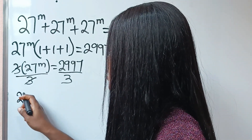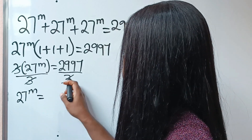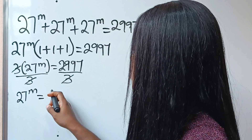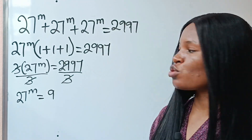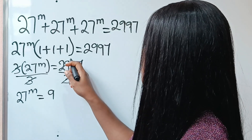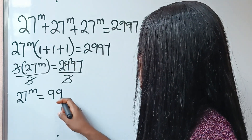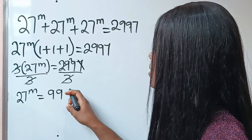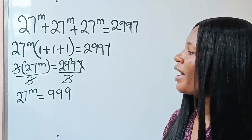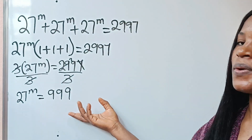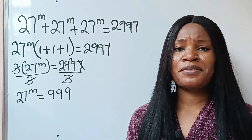After dividing by 3, we have that 27 to the power of m is equal to 999. We divide 2997 by 3 to get 999.